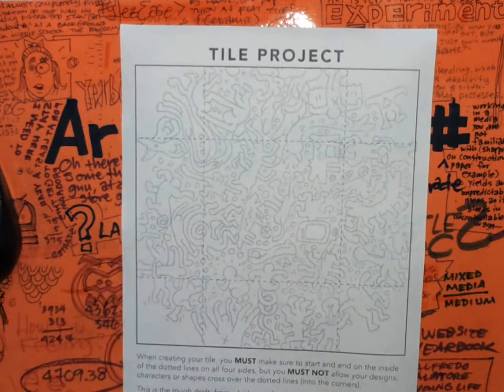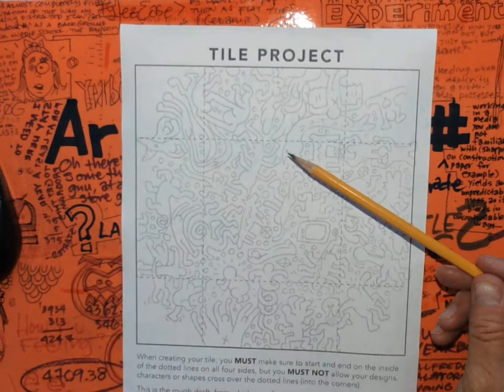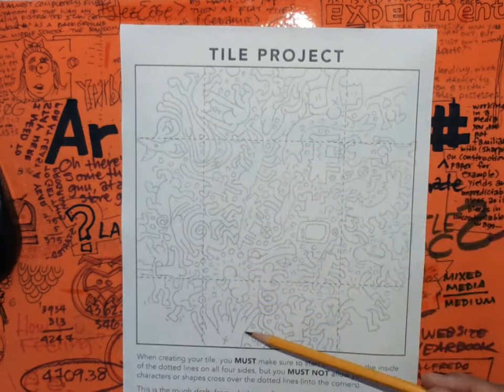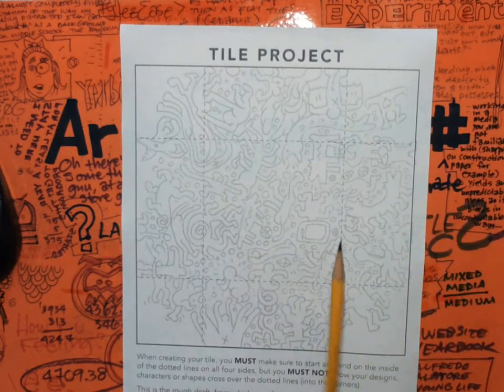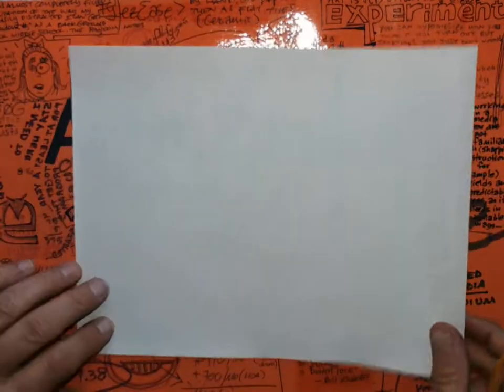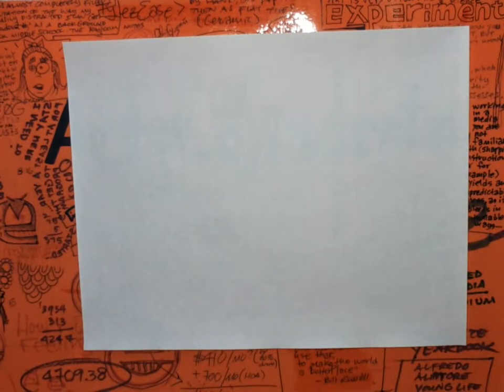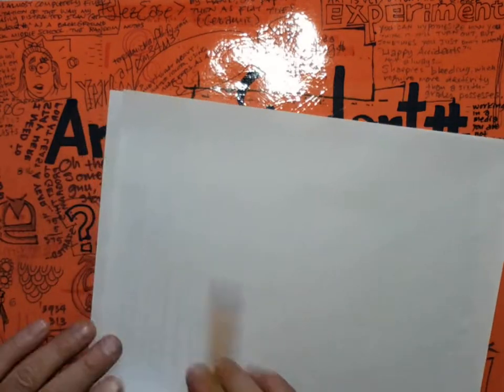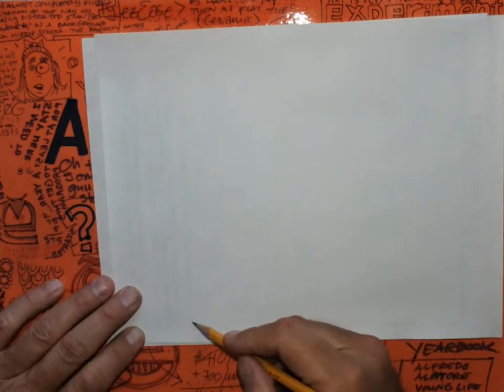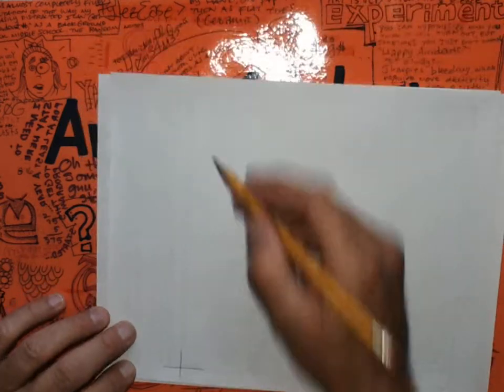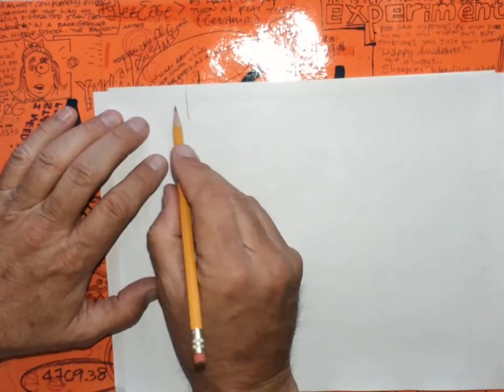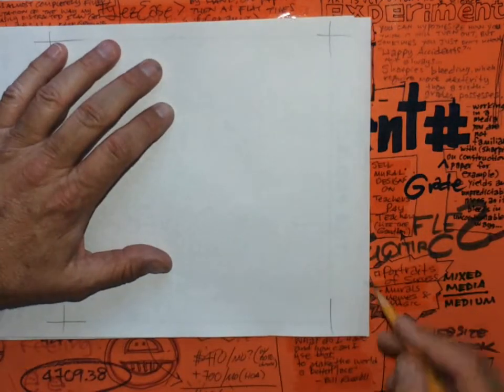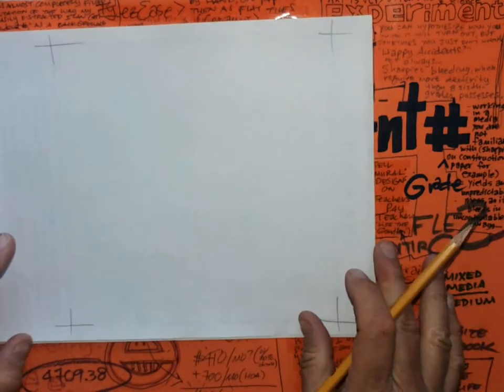So this is what you do next after you've traced all of the characters onto this sheet. You're going to mark on the back where the corners of the sheet are like this, and that's where the scratch board is going to go when you trace it.